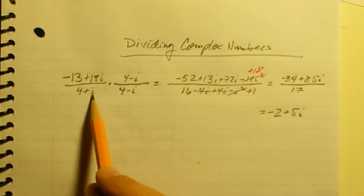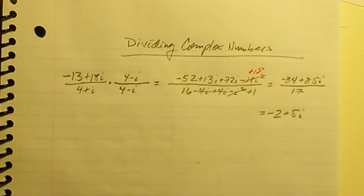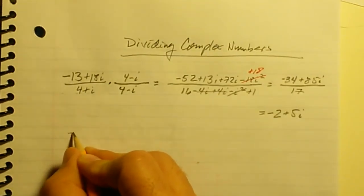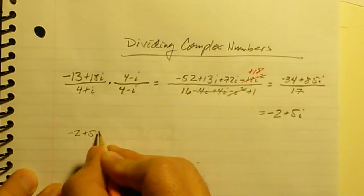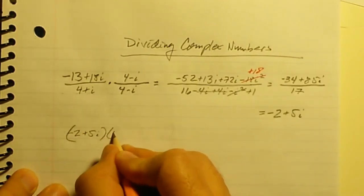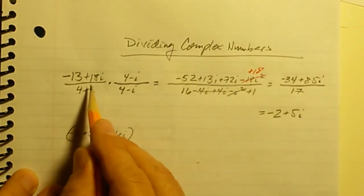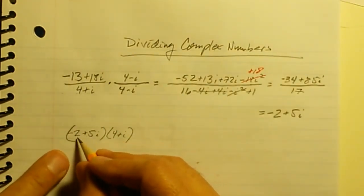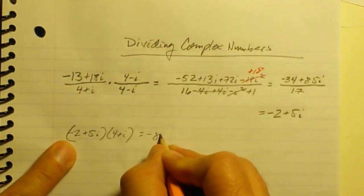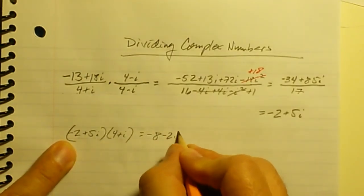So the answer is negative 2 plus 5i. Let's verify: if negative 13 plus 18i divided by 4 plus i equals negative 2 plus 5i, then negative 2 plus 5i times 4 plus i must equal negative 13 plus 18i. Let's check it.